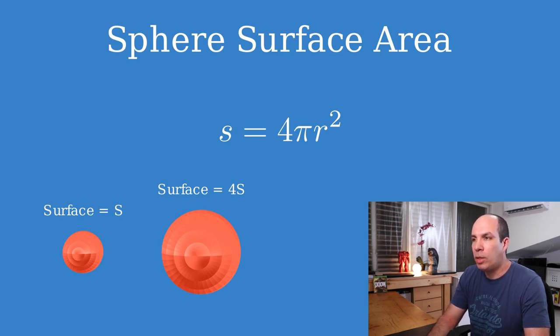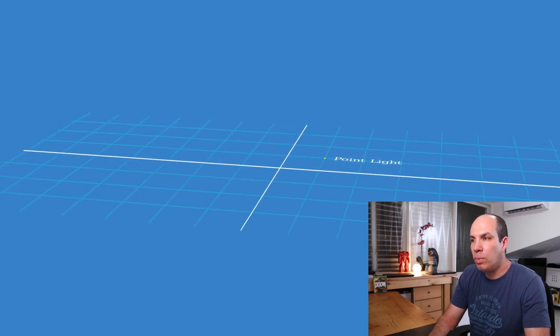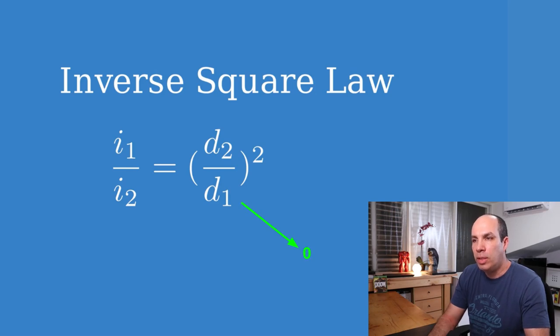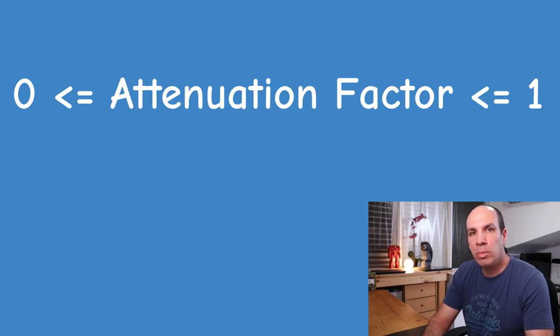Using this equation as-is to calculate our light attenuation factor is not very convenient. Remember that in the real world the light source is not a geometric point — it has some surface area. But in the case of our point light it actually is represented by a geometric point, which means that as we get closer to the light source the intensity approaches infinity. So we use a simplified lighting equation where the light intensity is multiplied by an attenuation factor. We expect the maximum of the attenuation factor to be 1, otherwise we may end up increasing the intensity of the light.